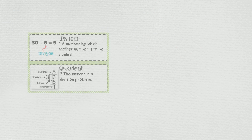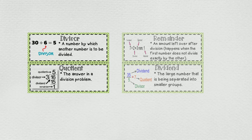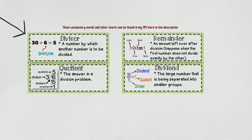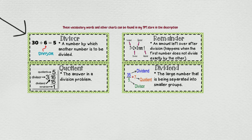Let's review a few vocabulary words before we get started. Our first word is divisor. Divisor is a number by which another number is to be divided. This is the number on the outside of the division bracket.